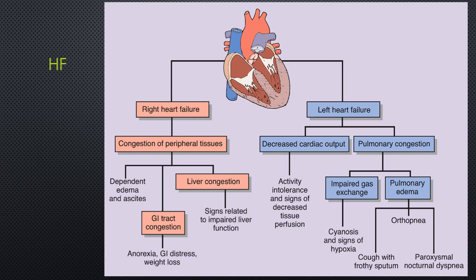The most common cause of right-sided heart failure is left-sided heart failure, where increased pressure in the lungs eventually overwhelms the right ventricle, causing a backup into the periphery with peripheral congestion and edema. This can lead to ascites, hepatomegaly, splenomegaly, decreased GI function, anorexia, and overall deconditioning, with a decrease in muscle mass and weight loss despite edema and fluid retention.